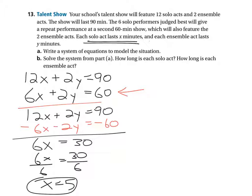And we know that X equals the solo acts. Each solo act is, now we found out, five minutes long. Great. Now we've got to find out what are we dealing with for the ensemble act. So all we need to do is take one of the original equations. Let's take 12X plus 2Y equals 90 and say we know what X is. X is equal to 5. Plus 2Y equals 90.